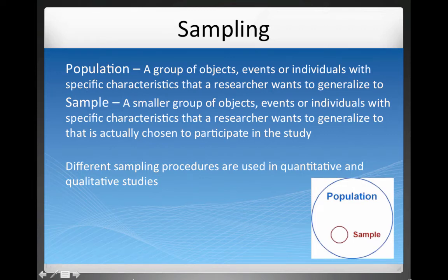Welcome. We're going to talk a little bit about sampling, or figuring out what participants are going to be part of your study. There are two basic concepts here. One is the population — a group of objects, events, or individuals with specific characteristics that a researcher wants to generalize to. A sample, on the other hand, is a smaller group of objects, events, or individuals with those specific characteristics that's actually chosen to participate in the study.